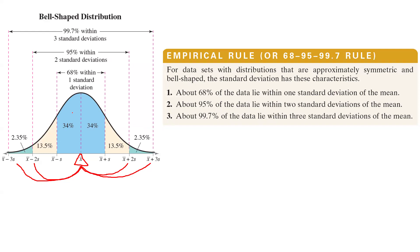You can break this down into smaller pieces. 68% is divided into 34% plus 34%. Adding 13.5% on each side gives you 95%. And finally, adding 2.35% on each side gives you 99.7%. This is the summary of the empirical rule, also called the 68-95-99.7 rule.